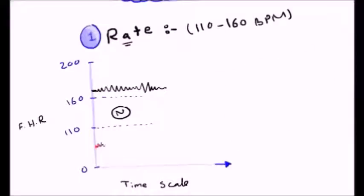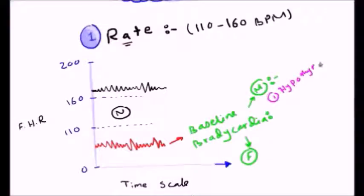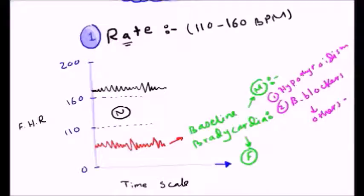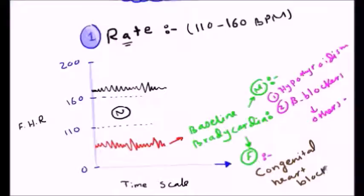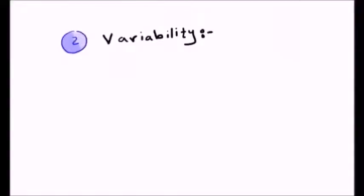If the heart rate is below 110, this is baseline bradycardia. The causes can also be maternal or fetal. Maternal causes include maternal hypothyroidism, the mother being on beta-blockers or opioids, maternal hypotension, and many others. Fetal causes include congenital heart block.